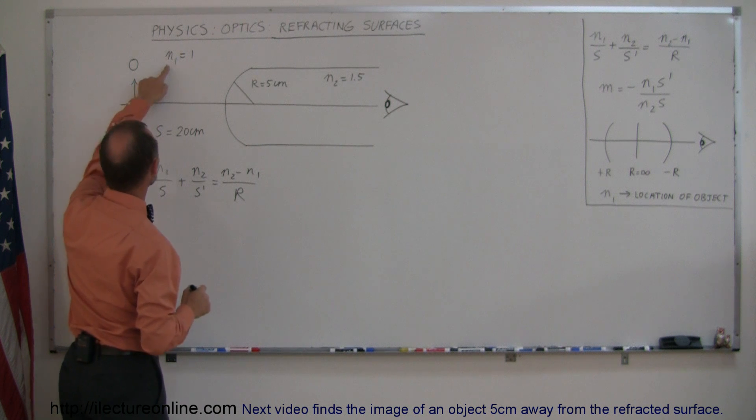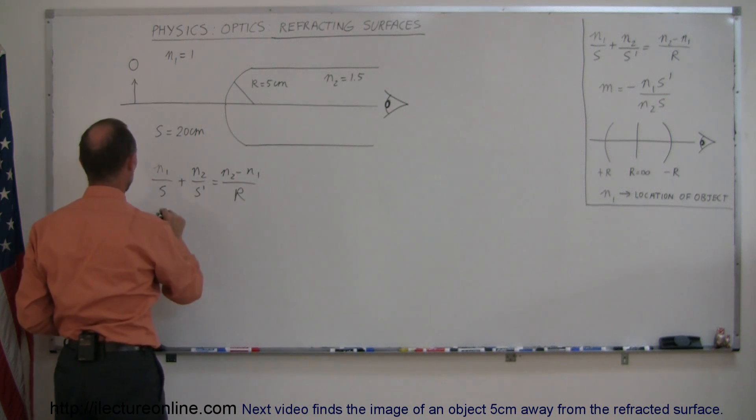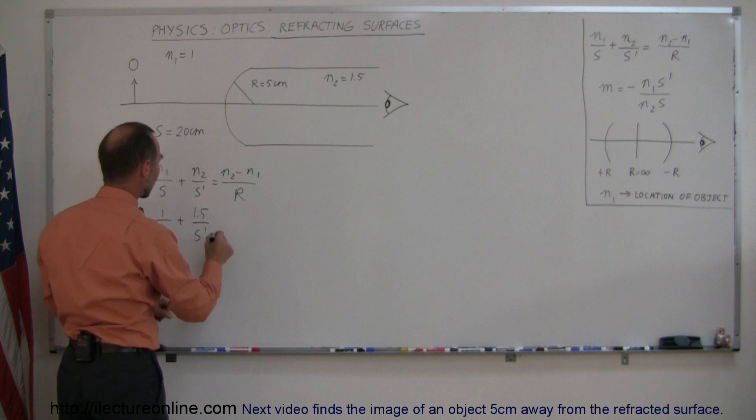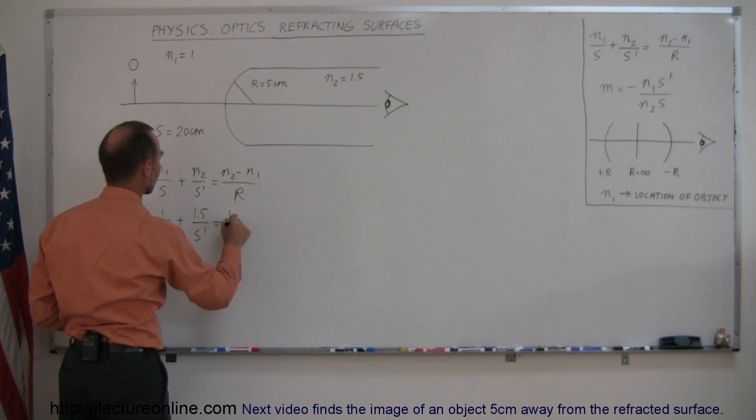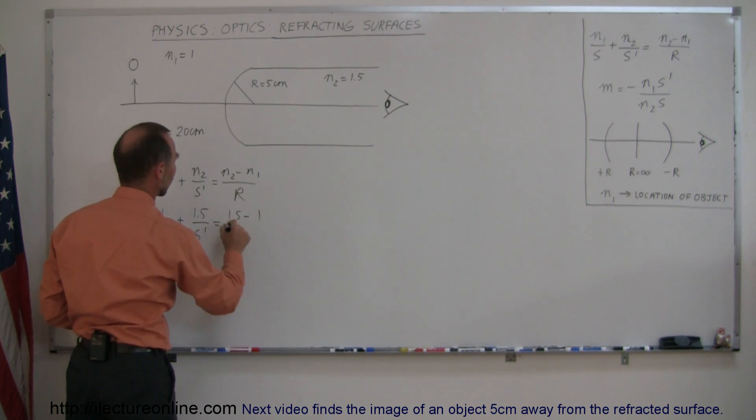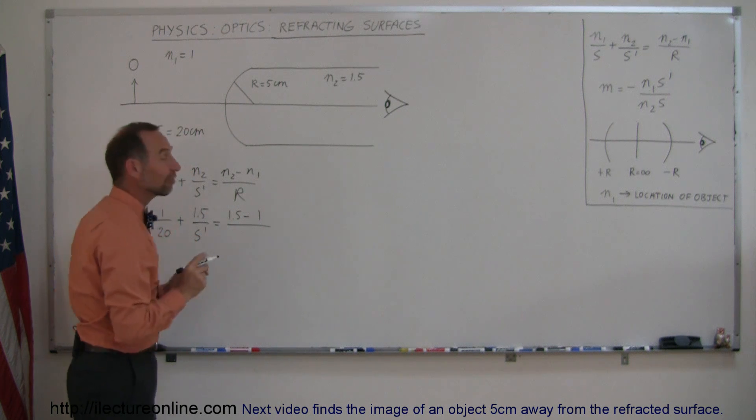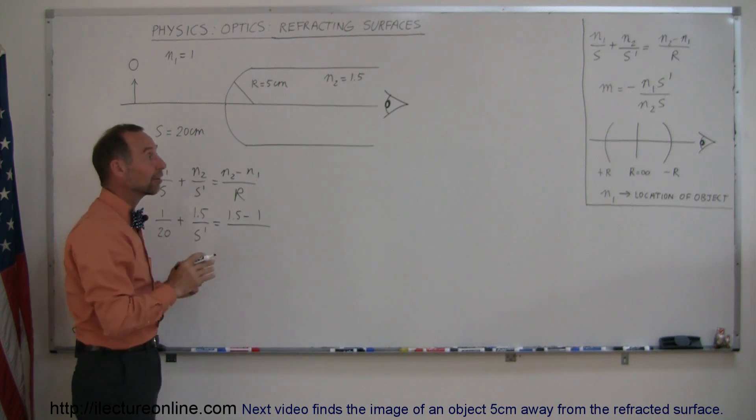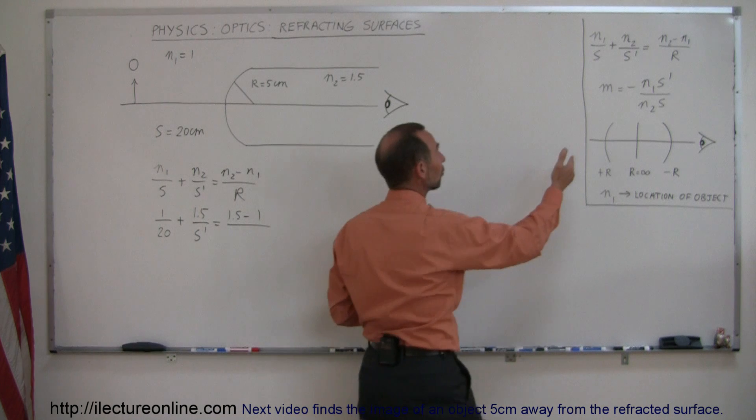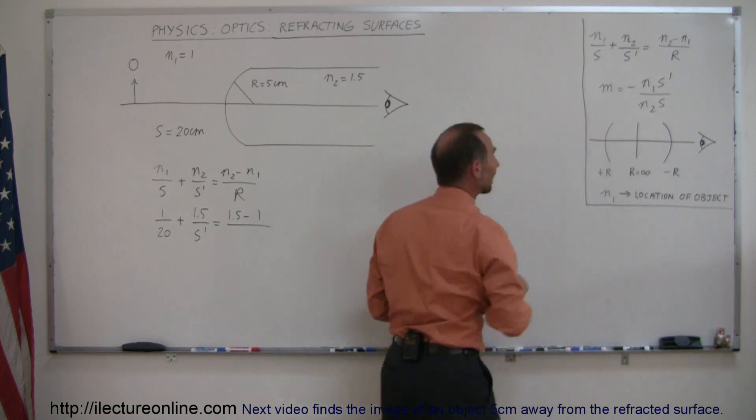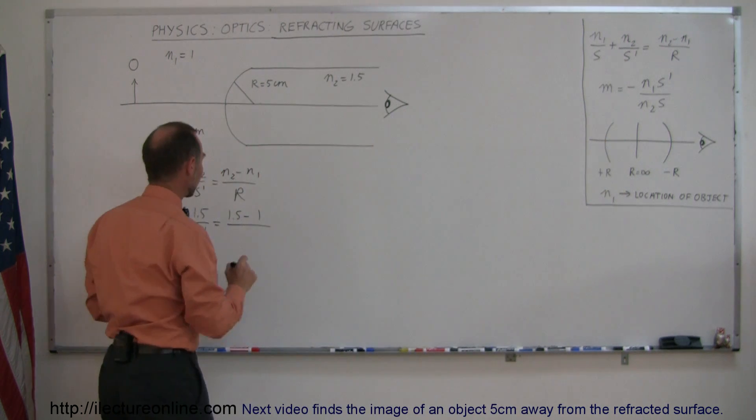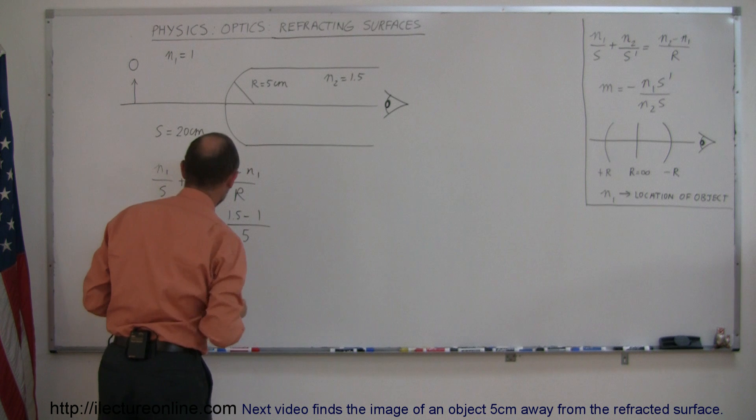N1 is the index of refraction on the side of the object. So there's 1 over 20 centimeters plus N2, which is 1.5 over S prime, is what we're looking for, equals N2, which is 1.5 minus N1, which is 1 divided by R. Now, R is 5 centimeters, but is it a plus or minus 5 centimeters? Well, if it's bulging away from the observer, we call that a plus radius of curvature, so that would be a positive 5 centimeters.